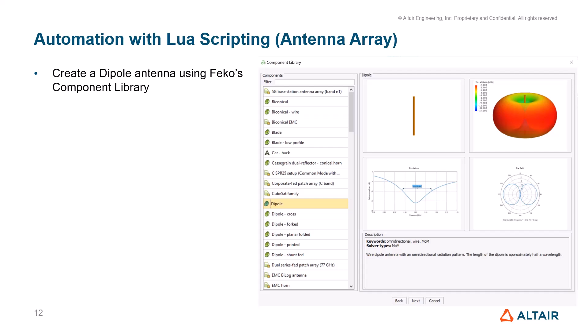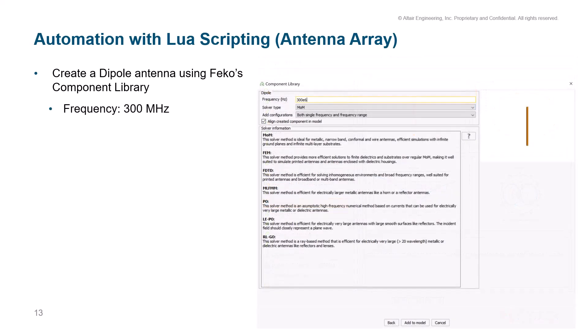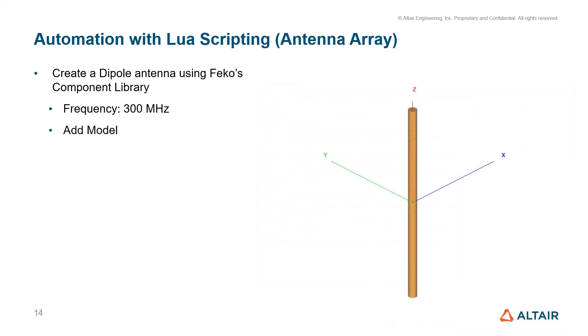Next, I want to go over deeper automation features with LUA scripting, specifically generating an antenna array. I've created a dipole antenna using FICO's component library, which includes many different geometries for simulations. Once the dipole is imported from the component library, it's ready to be simulated. I'm defining the frequency at 300 megahertz, so the wavelength will be about one meter. The dipole already has a port, excitation, and far field requests defined — it's ready to go.